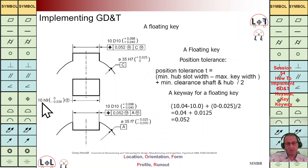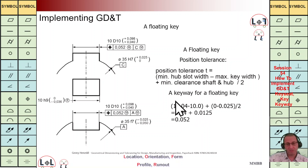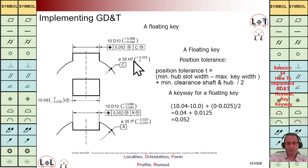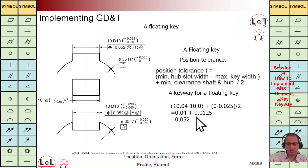The same as before: the maximum key width is 10 and the minimum width of key slot is 10.04, so 10.04 minus 10 — the same as before — plus something more because we have one key and can have more freedom. The minimum clearance between shaft and hub is 0.025 and 0, divided by 2. Considering the absolute value, it is 0.052. This value becomes TZ for positioning.